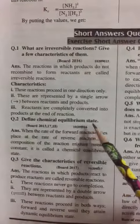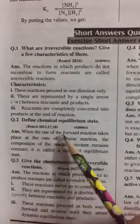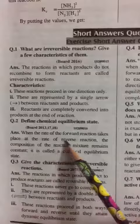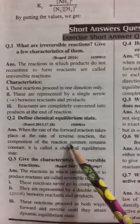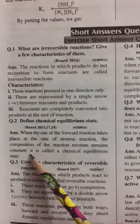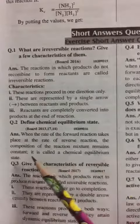Question No. 2 Define Chemical Equilibrium State. When the rate of forward reaction takes place at the rate of reverse reaction, the composition of the reaction mixture remains constant. It is called the chemical equilibrium state.